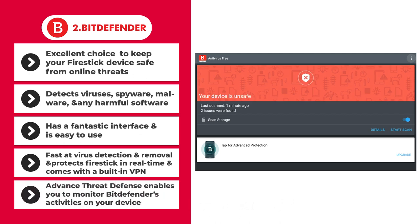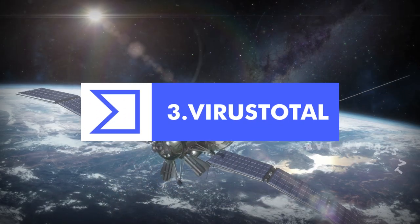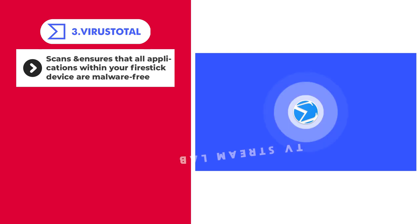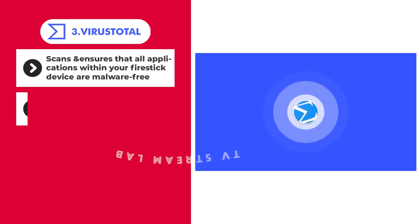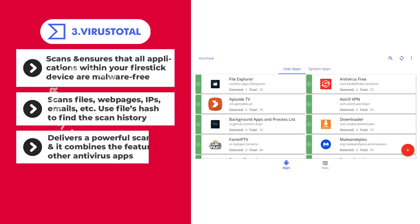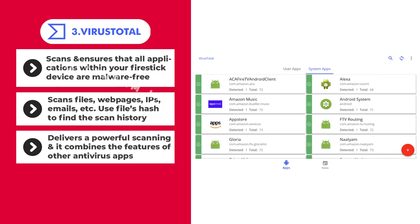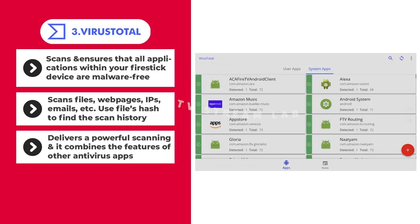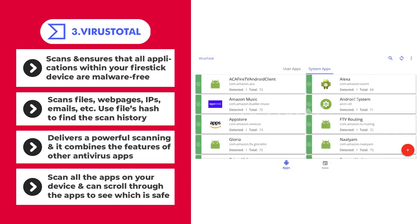Bitdefender protects your Fire Stick in real time and comes with a built-in VPN. The advanced threat defense enables you to monitor Bitdefender's activities on your device. VirusTotal scans and ensures that all applications within your Fire Stick device are malware free. It scans files, web pages, IPs, emails, etc. You can use the file's hash to find the scan history. VirusTotal delivers powerful scanning protection as it combines the features of other antivirus apps.